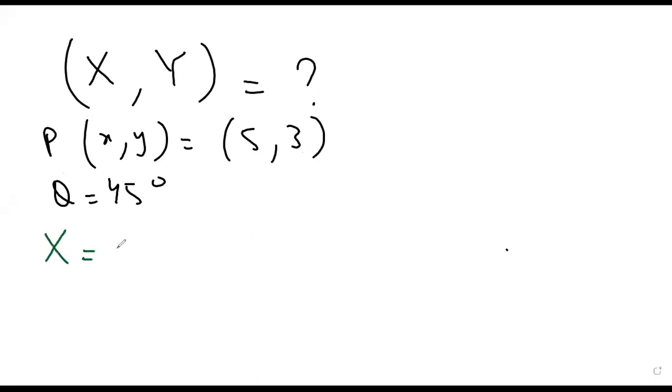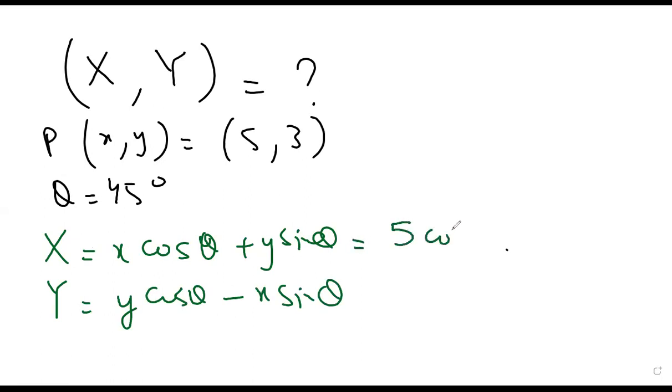X equals x cos theta plus y sin theta. Y equals y cos theta minus x sin theta. So X is 5 cos 45 plus 3 sin 45, and Y is 3 cos 45 minus 5 sin 45.